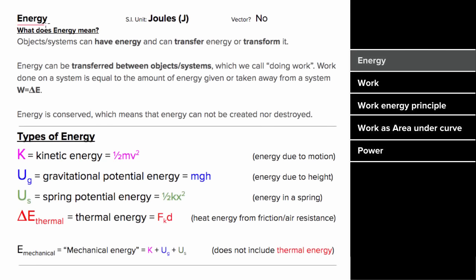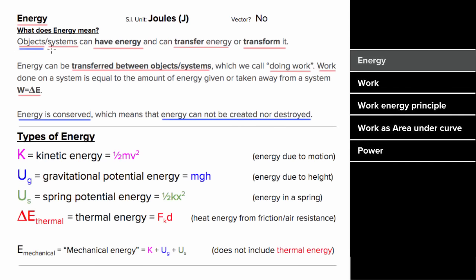Not only are there many different kinds of energies, but both objects and systems of objects can have energy. Once they have that energy, they can transfer it to another system or object, or that energy could transform to a different type of energy inside that system. When energy gets transferred, we call that work, and the amount of work done is the amount of energy that was transferred. Energy is conserved, which really just means that you can't create or destroy energy — you can simply transfer it between objects or systems.